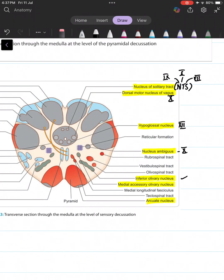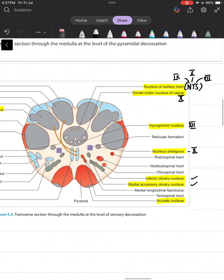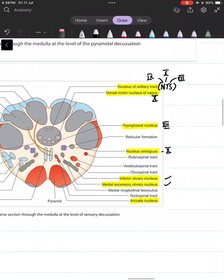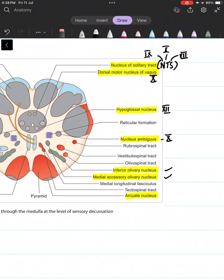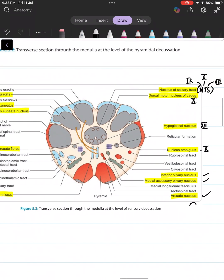The inferior olivary and medial accessory olivary nucleus. We will understand what are olives in the next session better. Arcuate means curved or arched, so the arcuate nucleus near the pyramids.